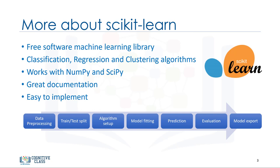Most of the tasks that need to be done in a machine learning pipeline are already implemented in Scikit-learn, including pre-processing of data, feature selection, feature extraction, train-test splitting, defining the algorithms, fitting models, tuning parameters, prediction, evaluation, and exporting the model.